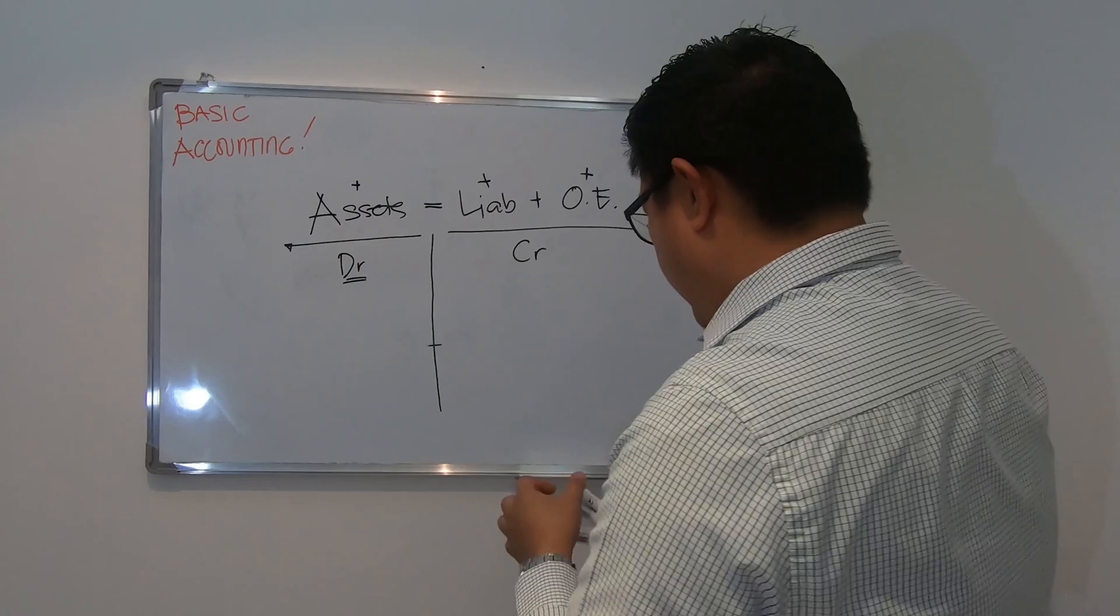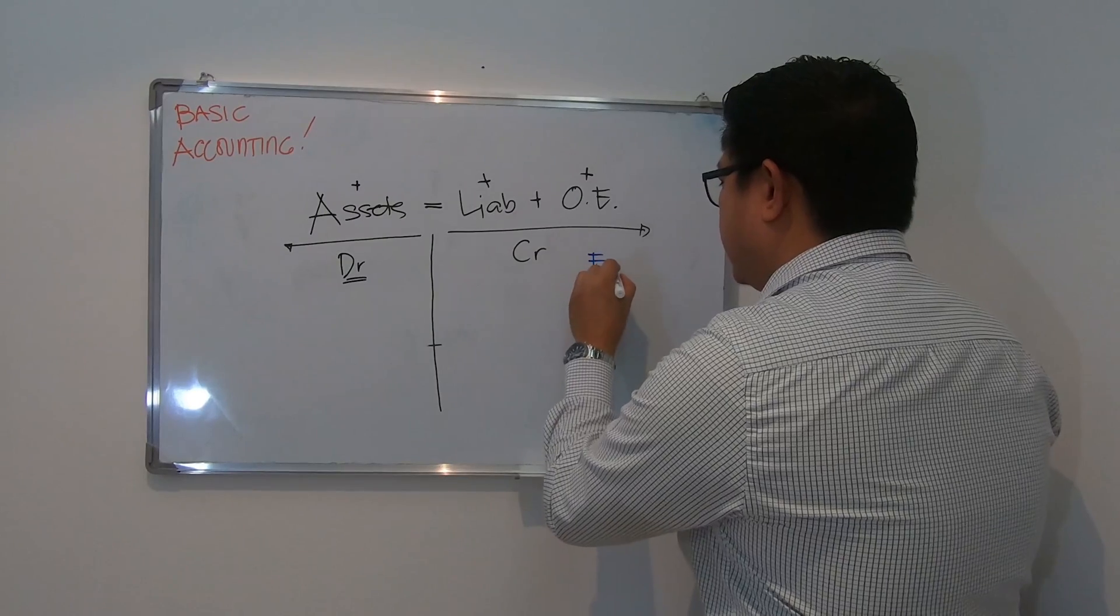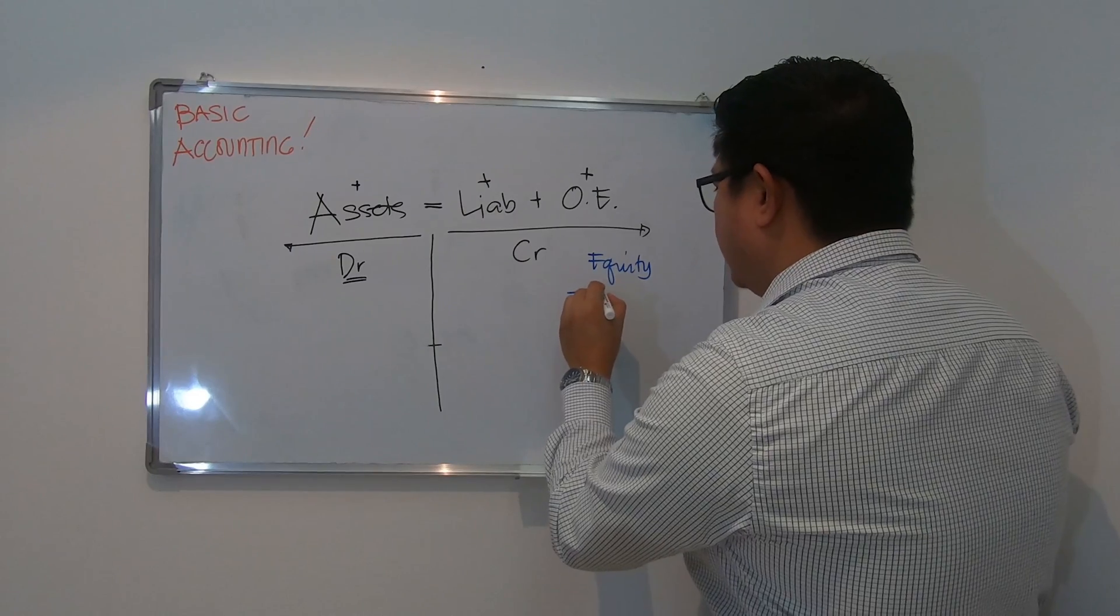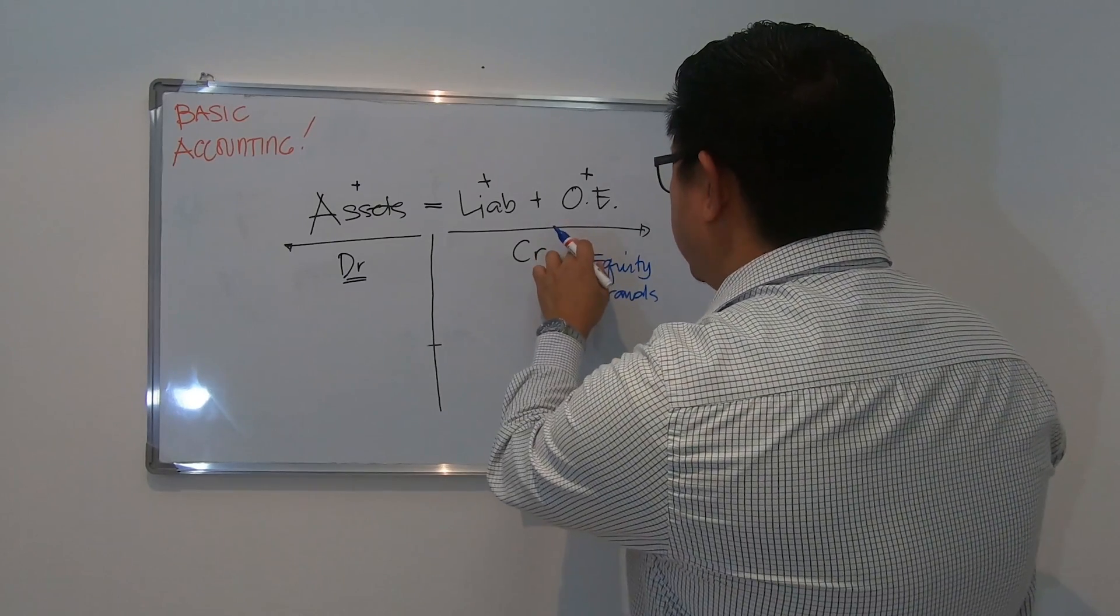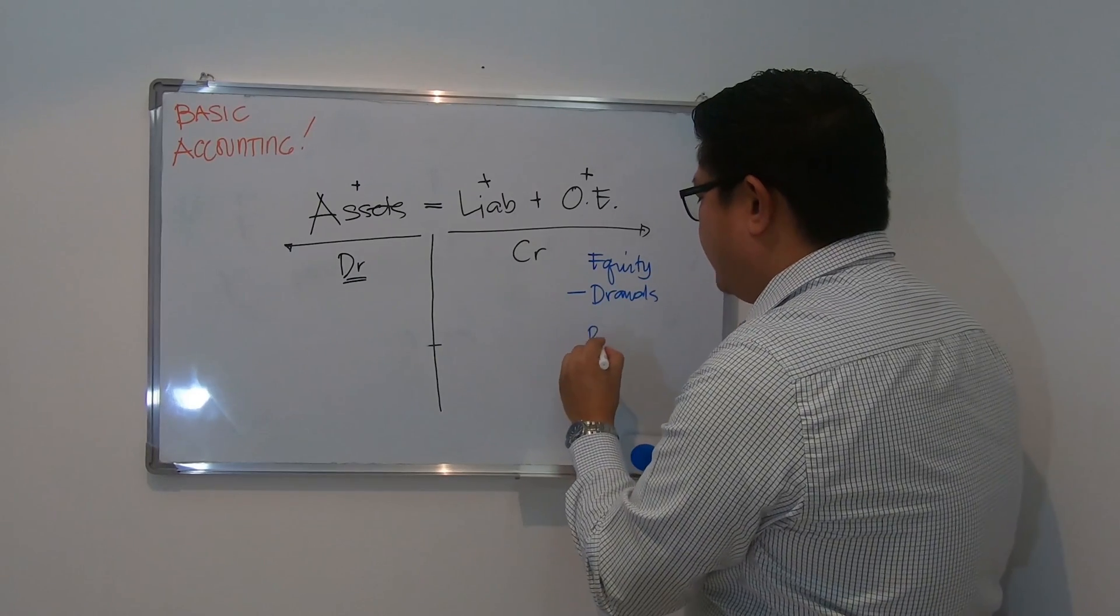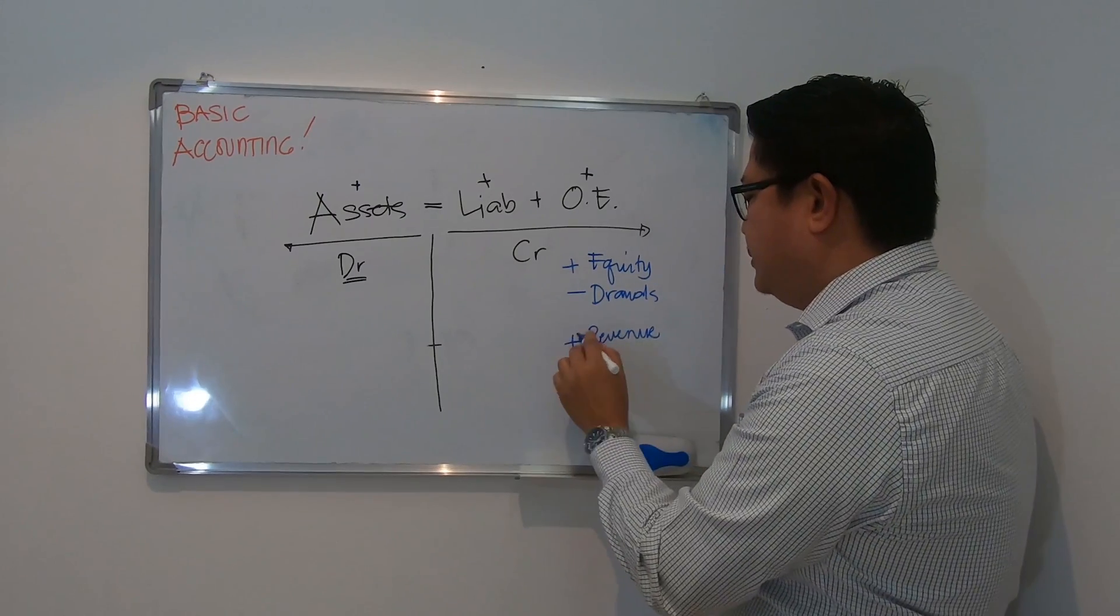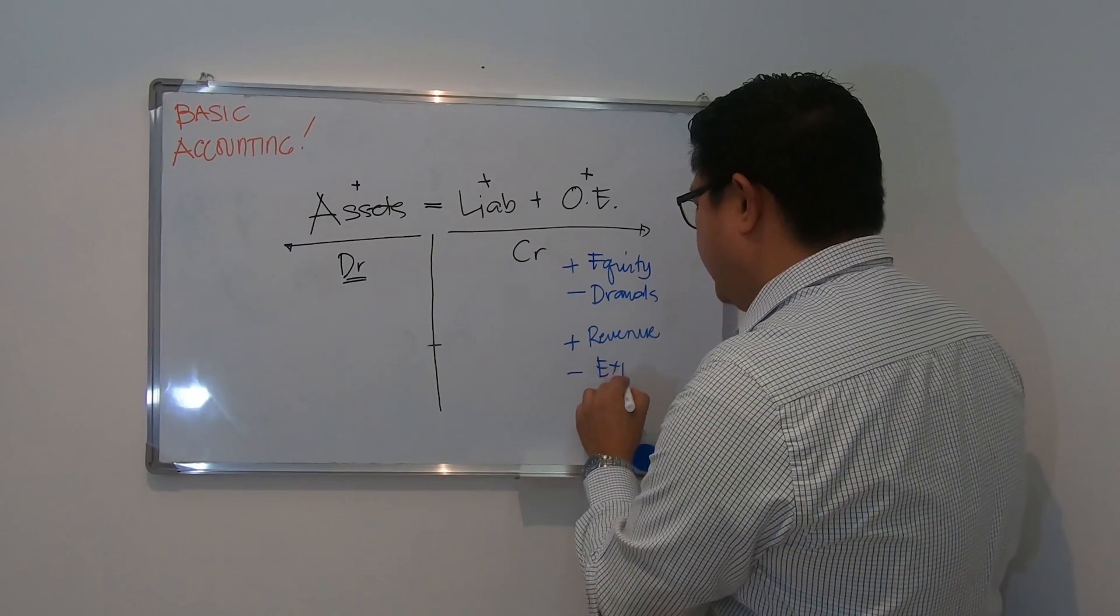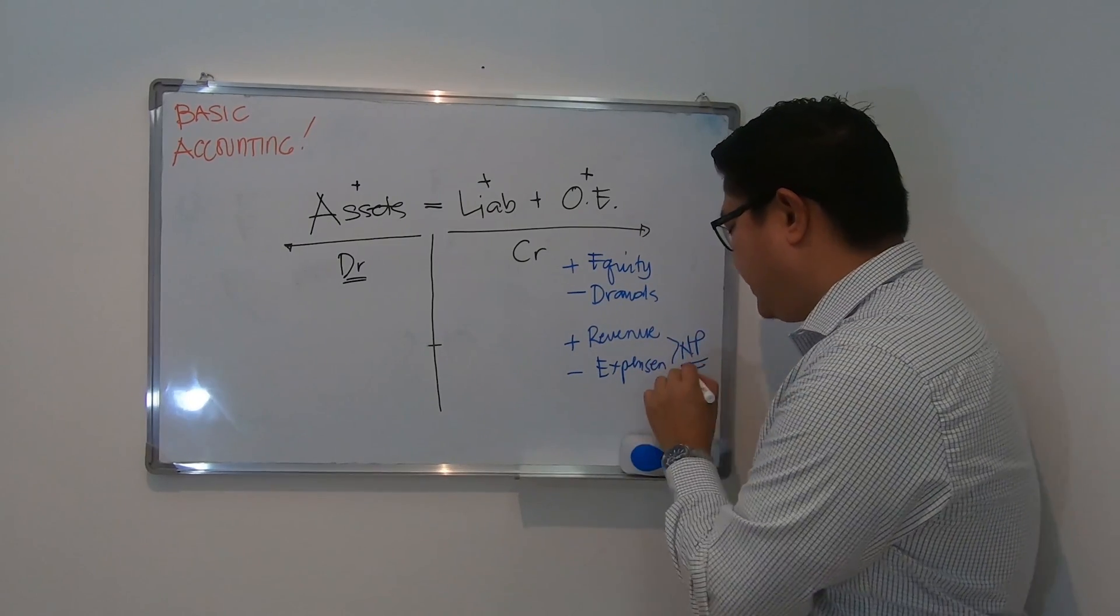Now in owner's equity, we have some components. We have beginning balance or equity. We have contra account of drawals. This is withdrawal by the owners of the business or this is contra account of equity. And then we have revenue. So we'll put positive here. This is the income generated by the company. But we have to remove the expenses from revenue, and only the net profit will come to owners.